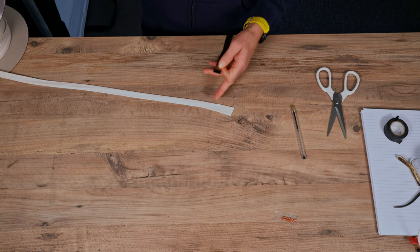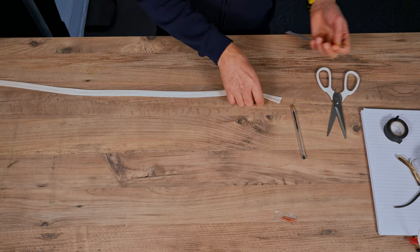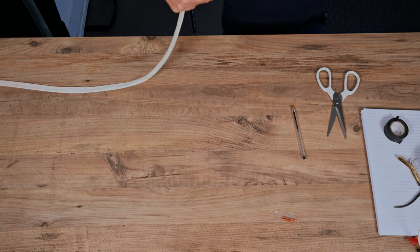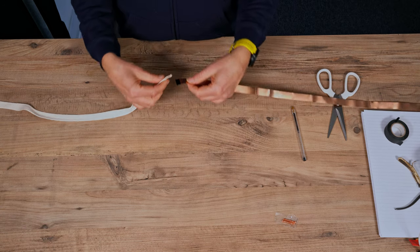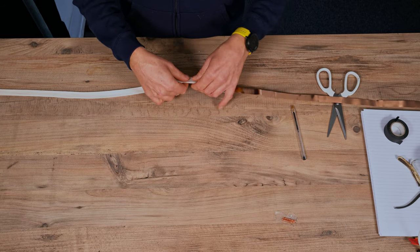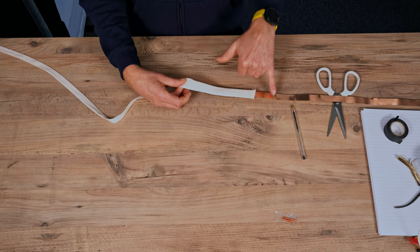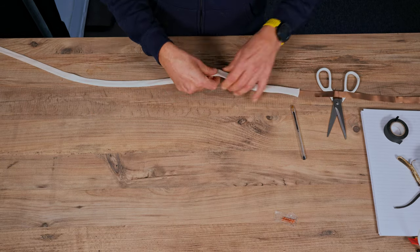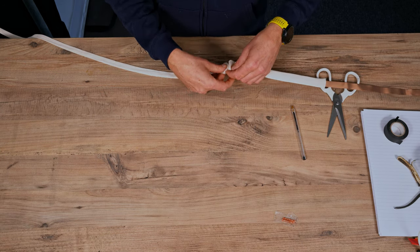And then you're going to thread it through this. So when you're threading through, you want it to be flat. So I'm going to put this over the end of the bench like this. Here I go.